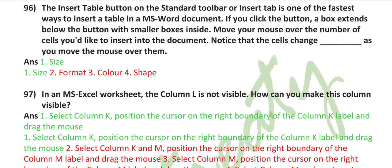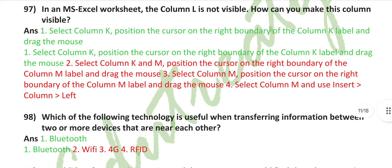The insert table button on the standard toolbar or insert tab is one of the fastest ways to insert a table in an MS Word document. If you click the button, a box stands below the button with smaller boxes inside. Move your mouse over the number of cells you'd like to insert into the document. Notice that the cells change size as you move the mouse over them. In an MS Excel worksheet, column L is not visible. How can you make this column visible? Select column K, then position the cursor on the right boundary of the column K level and drag the mouse.